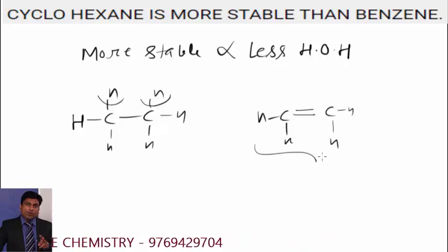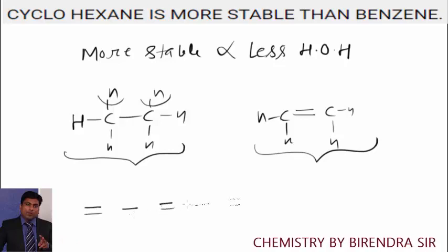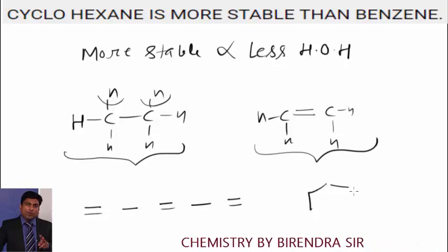So how can you say this is more stable than this alkane, that is ethane. Ethane is more stable than ethene. Yes, of course, if you have three double bonds in open chain, as compared to this, you can definitely say that benzene is more stable. But here we are comparing benzene with cyclohexane.